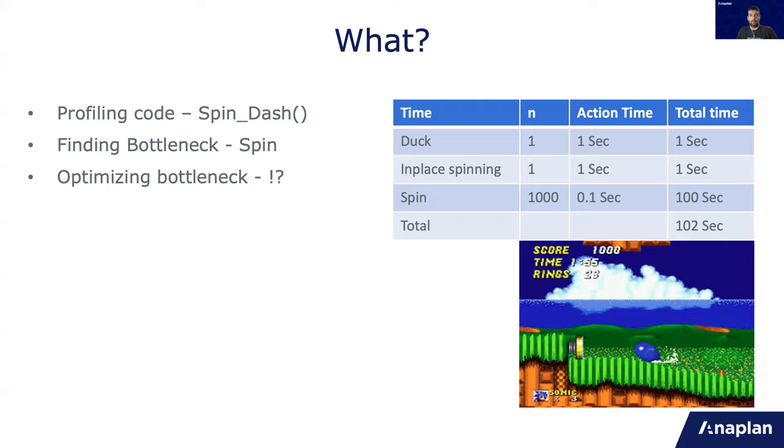And the third phase is basically moving by spinning forward. So I created a table which seems like a profiling table. It has the total time and how much time each function took and how many times each function ran. So in this case, even though spin has the fastest action time, because it is done 1000 times, it is the bottleneck. And this is a lot of the time the case in code as well.